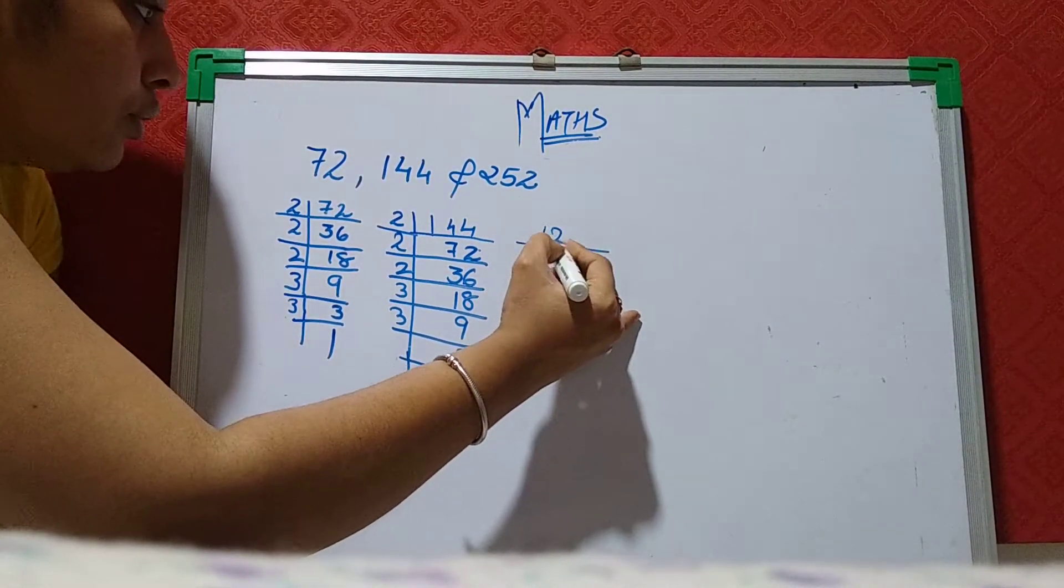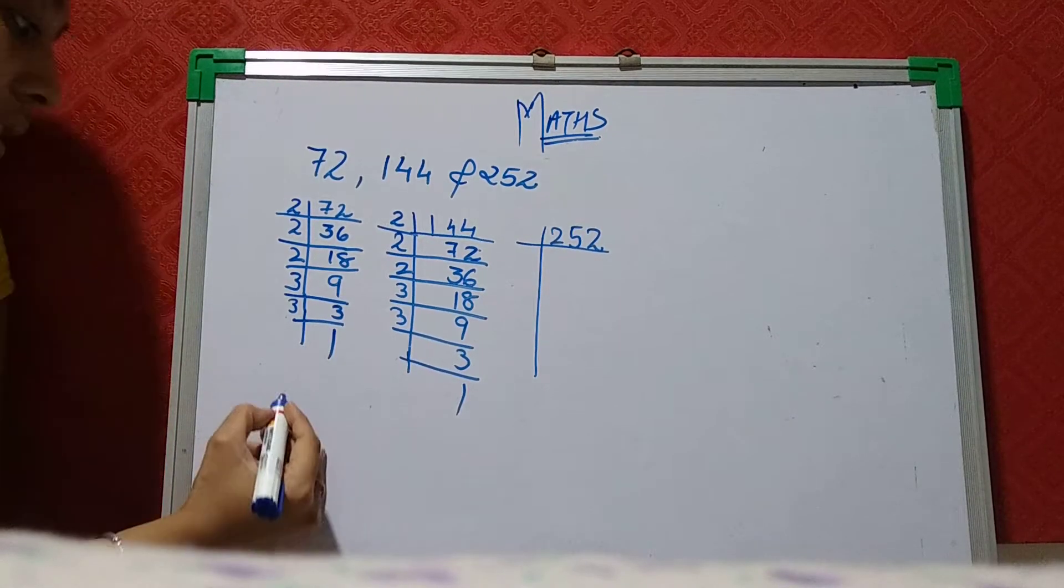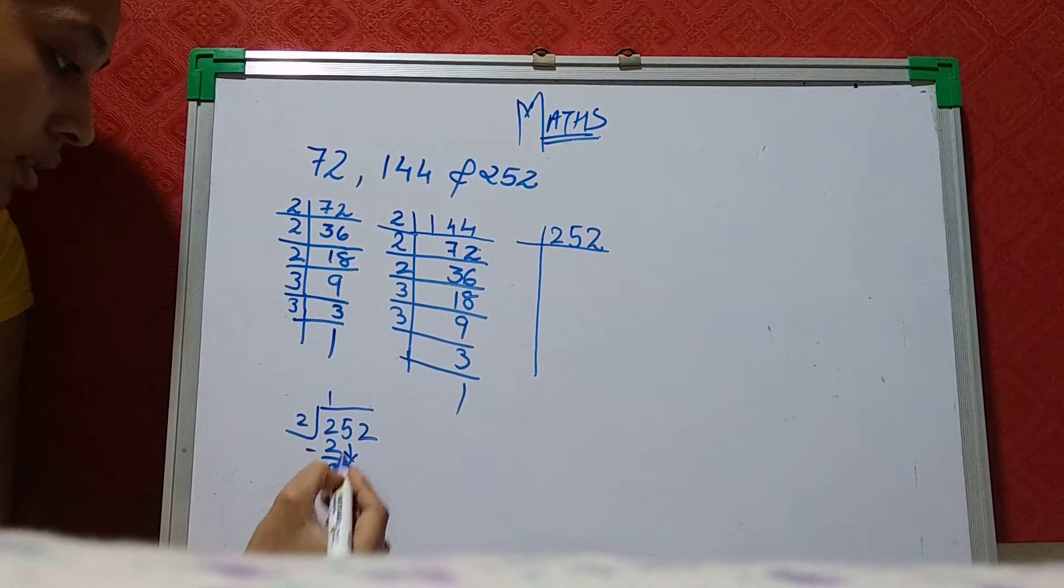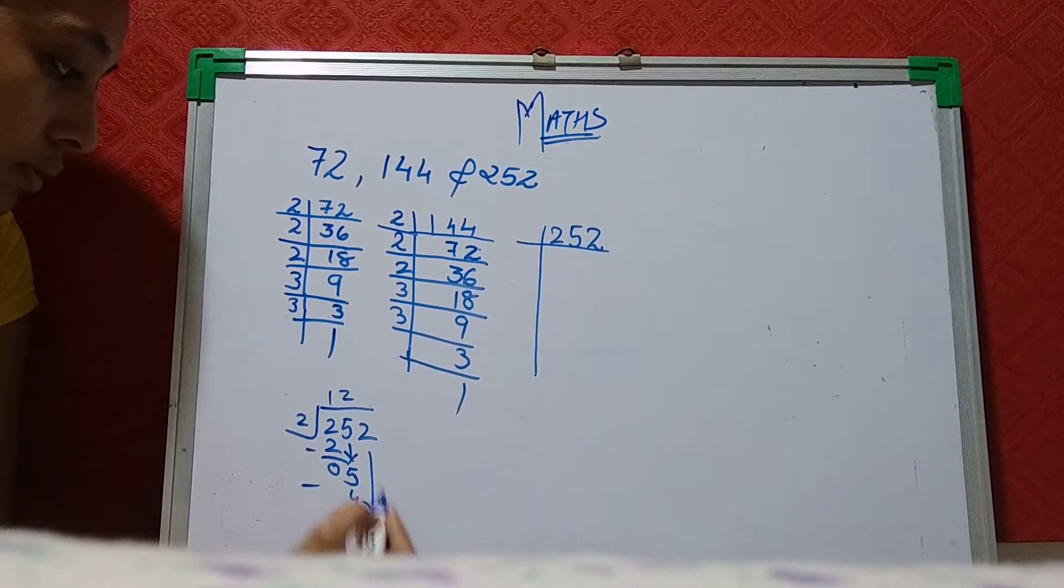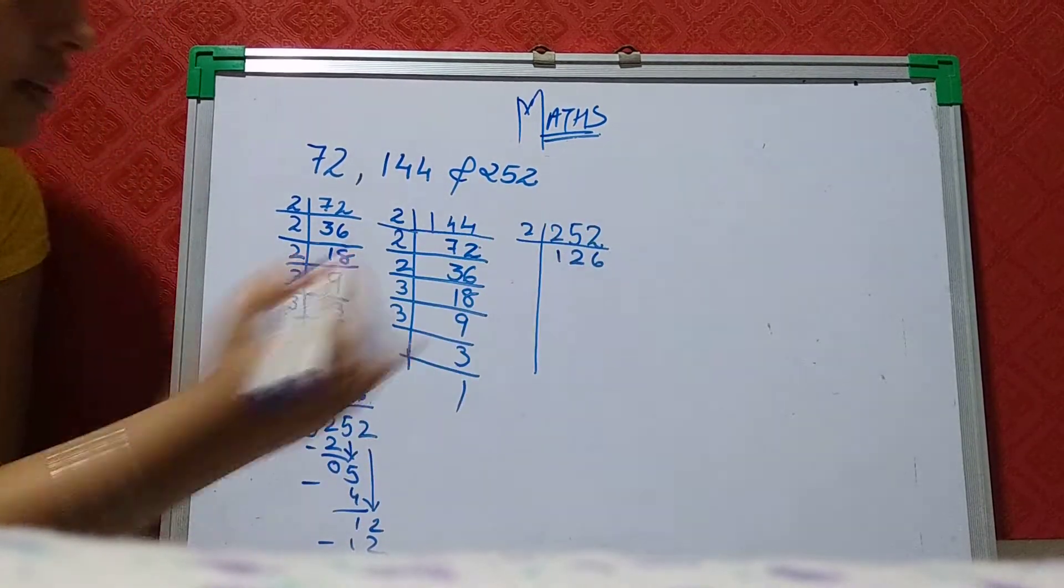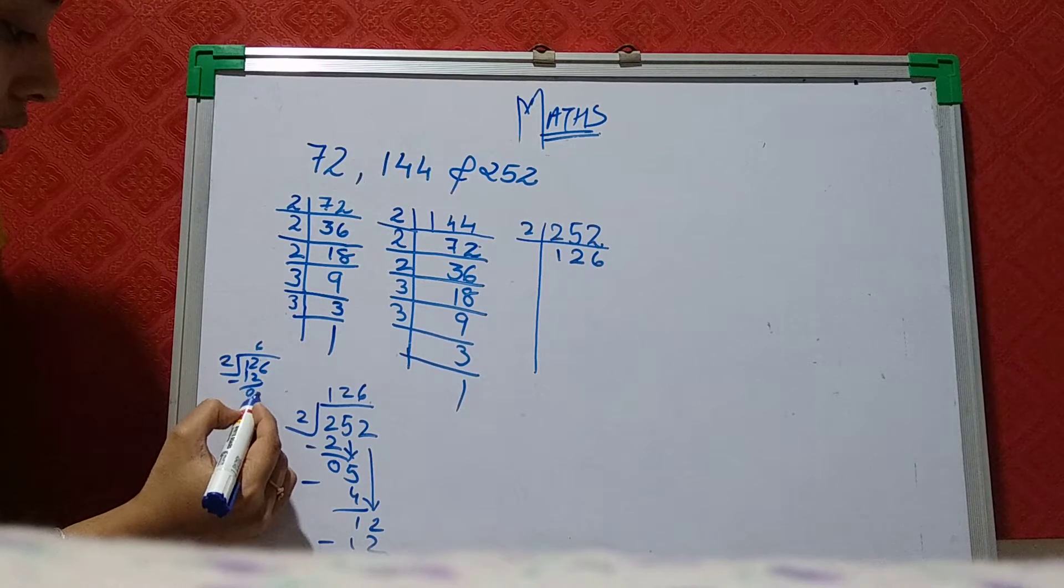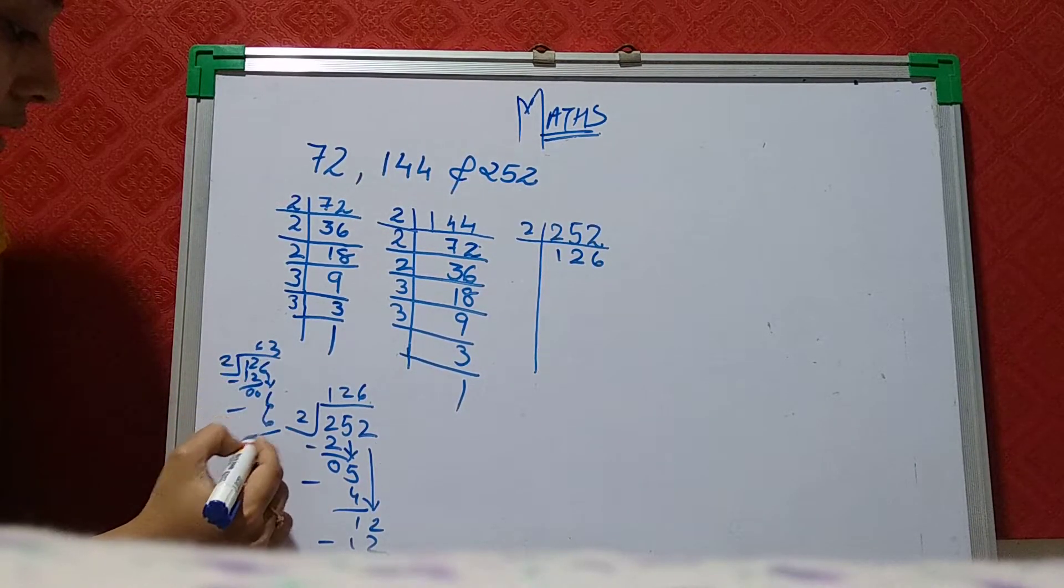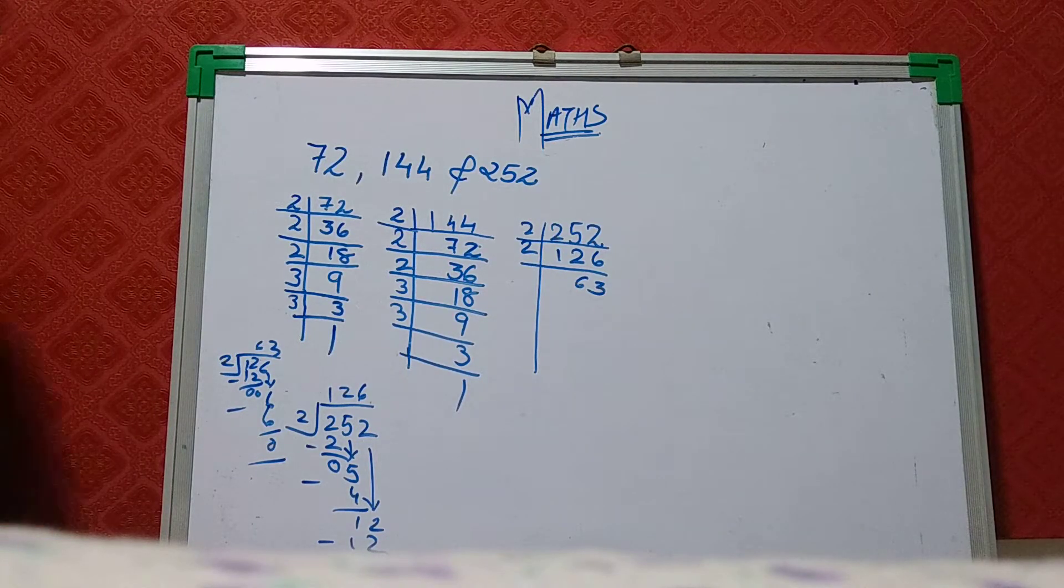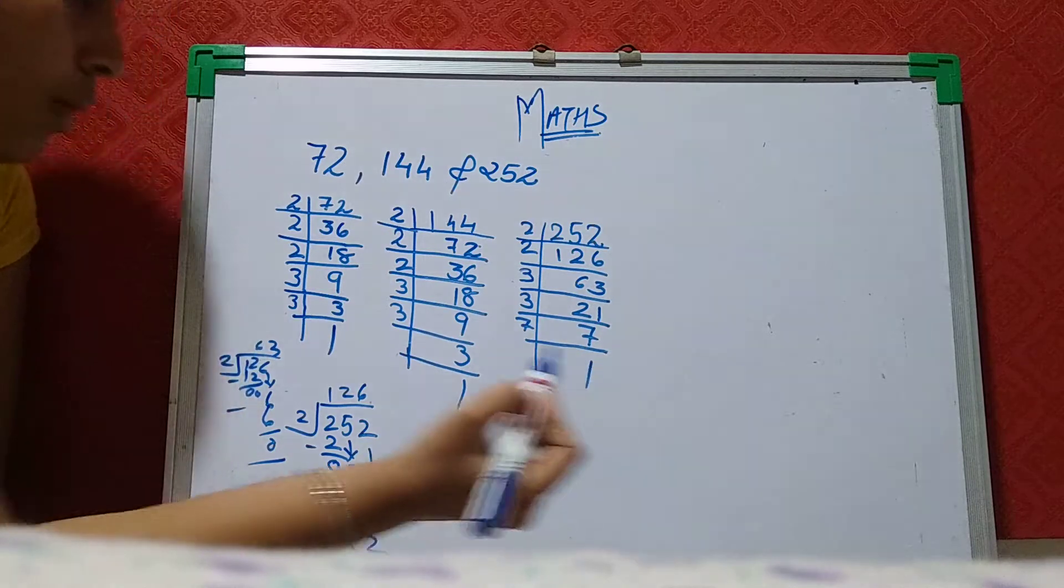Now we will move forward with 252. 252 comes in the table of 2 or not, let's check it out. We will divide it. 2, 2s are 4. 2, 6s are 12. So 126. Then 126, 2, 6s are 12. 2, 3s are 6. 63, 3s are table. 3, 7s are 21. 7, 1s are 7.